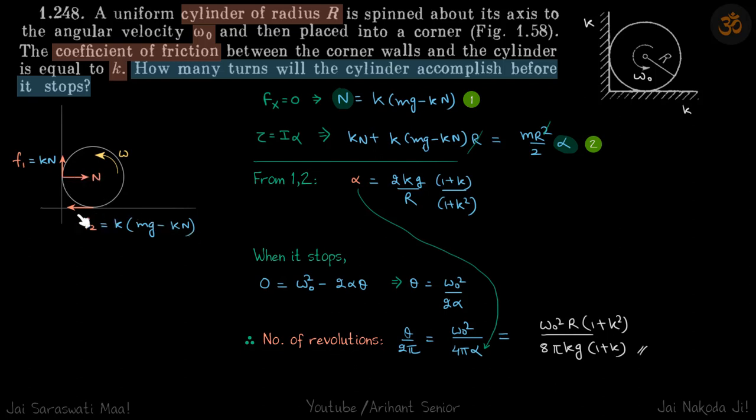So we can balance forces in X direction. And that way we can get the value of N. So let's write forces in X direction. So that is N is equal to KMG minus KN. And then torque is equal to I alpha. That gives KN plus K into MG minus KN times R is equal to MR square by two alpha.